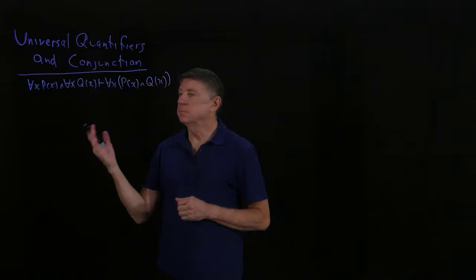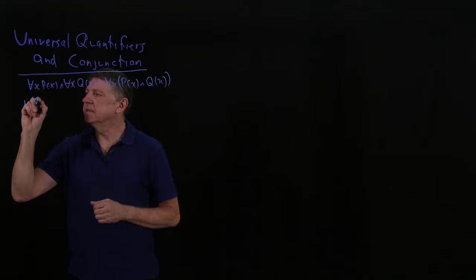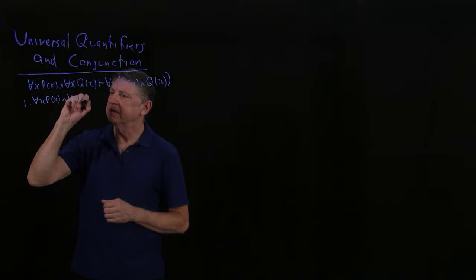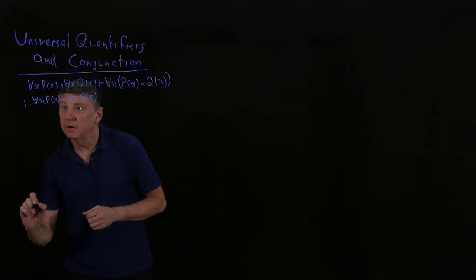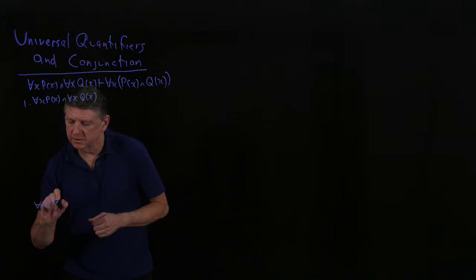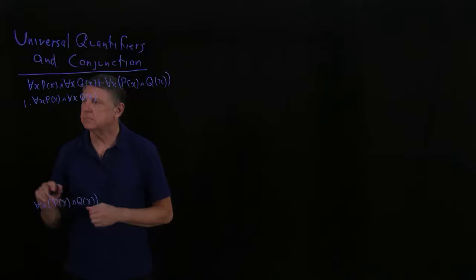To prove this, we'll begin by writing our premise and our conclusion. In this instance, there's one premise, so that is everything is P and everything is Q. And then our conclusion will be that everything is both P and Q.